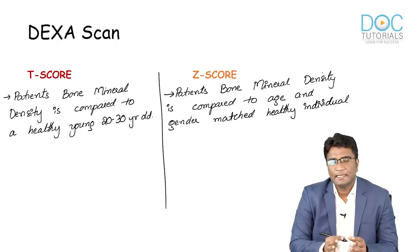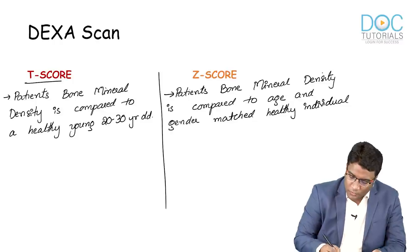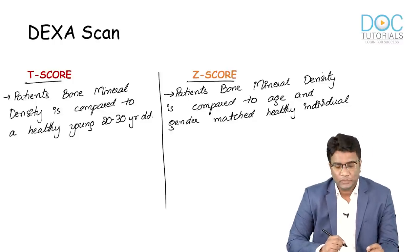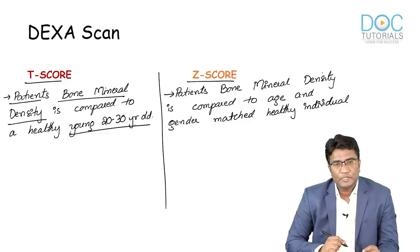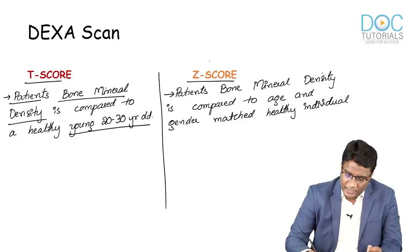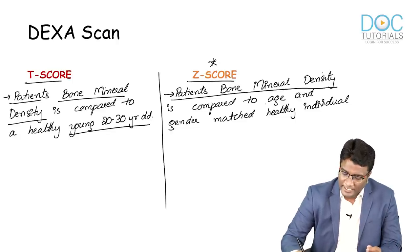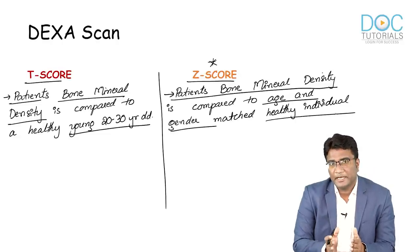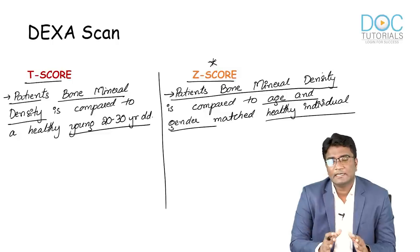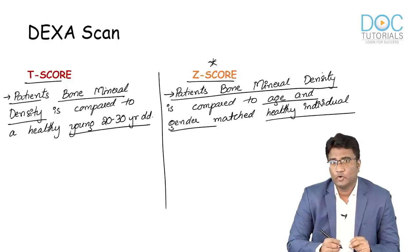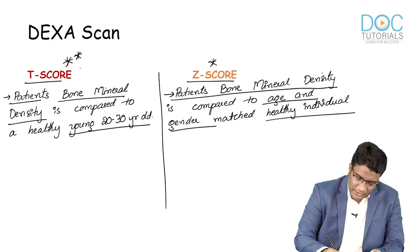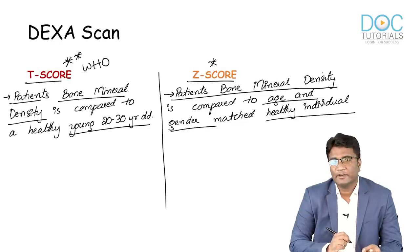Once the DEXA scan is done, values are expressed in terms of standard deviation. We have two types of scores: T-score and Z-score. In the T-score, the patient's bone mineral density is compared to a healthy young 20-to-30-year-old person. If comparing to an age and gender matched healthy individual, that is called a Z-score. WHO recommends T-score for the definition of osteoporosis.